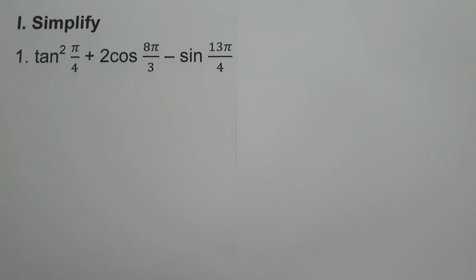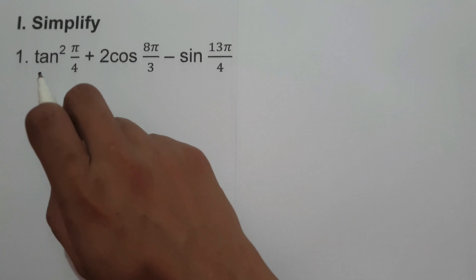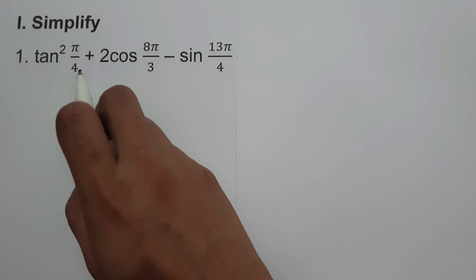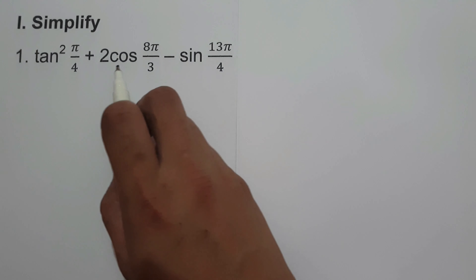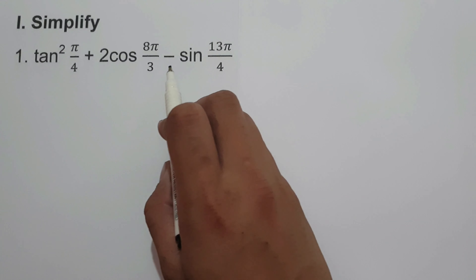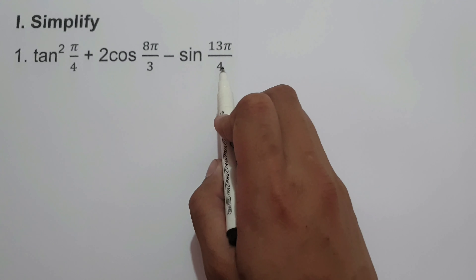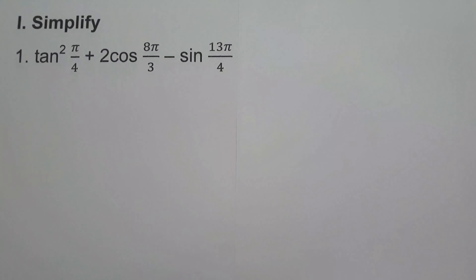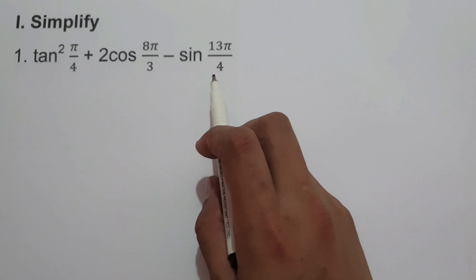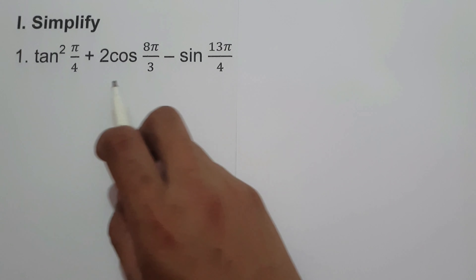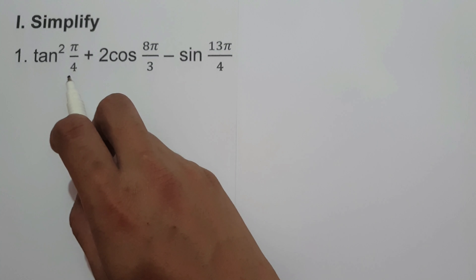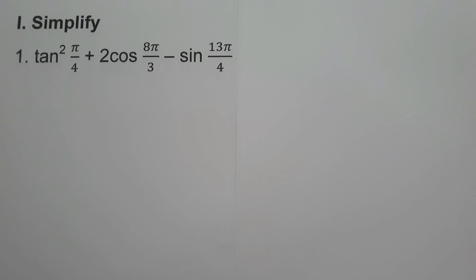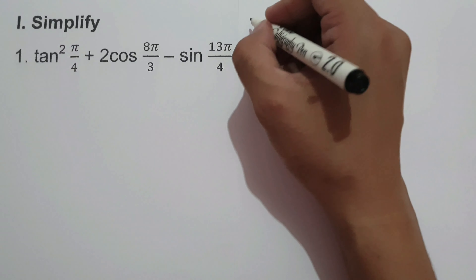In this video, we are going to find the exact value of tangent square pi over 4 plus 2 cosine 8 pi over 3 minus sine 13 pi over 4. To find the exact value of this trigonometric function, let us convert the given radians to degrees and use the reference angle to find the exact value.